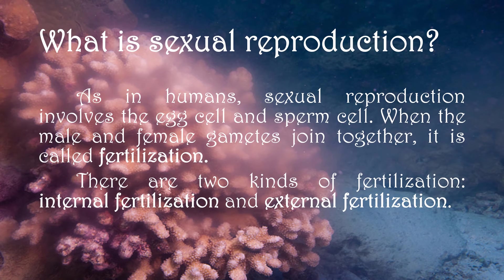What is sexual reproduction? As in humans, sexual reproduction involves the egg cell and the sperm cell. When the male and female gametes join together, it is called fertilization. There are two kinds of fertilization: internal fertilization and external fertilization.